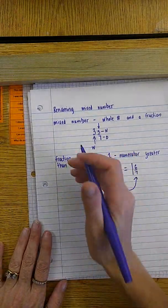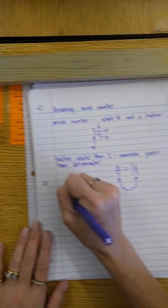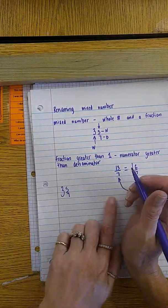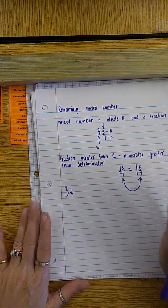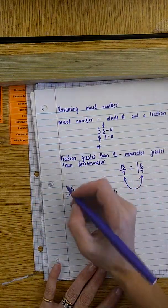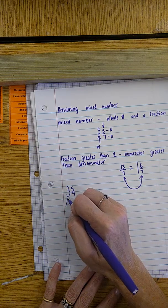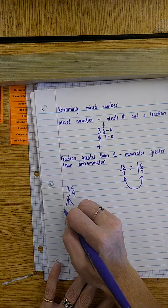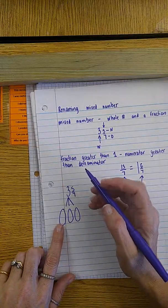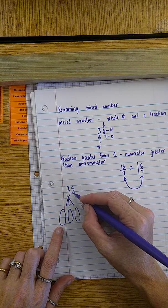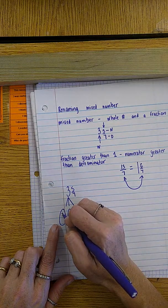So we went from a mixed number to a fraction greater than one. And the children were shown some different strategies. One of the strategies that they were shown was to make groups. Your whole number tells you how many groups you need to have. One, two, three. And inside your group, your denominator tells you what the whole number should look like in fraction form.